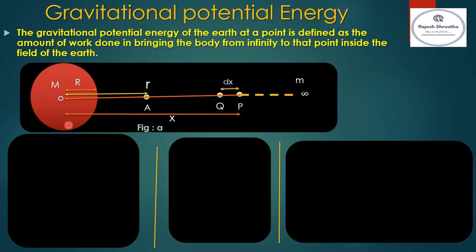Let us consider the Earth is spherical in shape, having mass M and radius R, and a body having mass m is brought from infinite distance to point P where the gravitational field of the Earth starts. From P to Q, a small displacement dx is done by the body, and it is at a distance x from the center of the Earth.